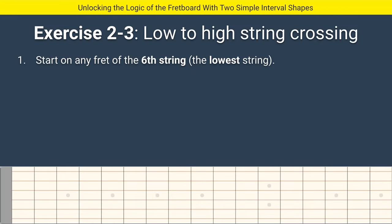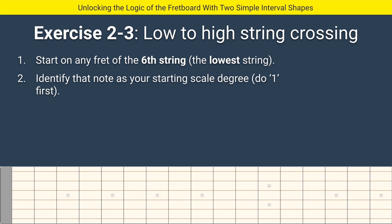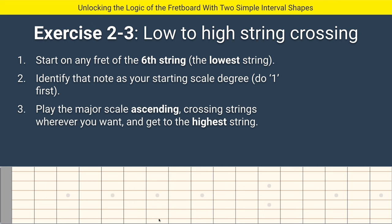We're going to start on any fret of the sixth string, then identify that note as our starting scale degree — at first we're just going to call it one. So start on any fret of the sixth string; I'll choose fret seven as demonstration. We're not worrying about the note name. Then play the major scale ascending, crossing strings wherever you want, and just get to the highest string. It's like a video game like Frogger — you're just trying to cross. When you arrive at the highest string, you have done it.